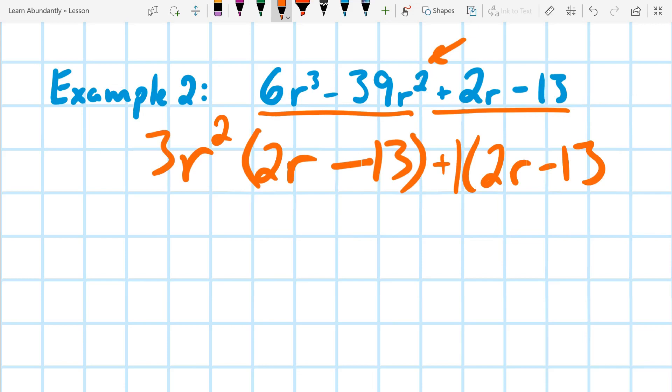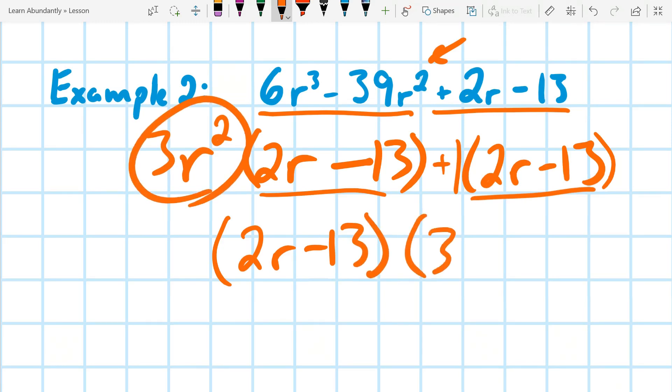So now when we look at it, we can see our first factor is 2r minus 13, and our second factor is 3r squared plus 1.